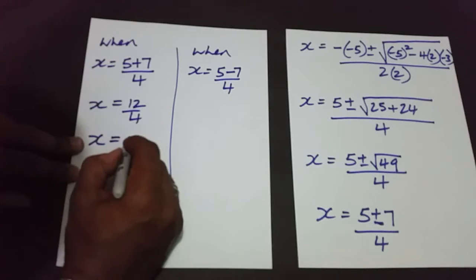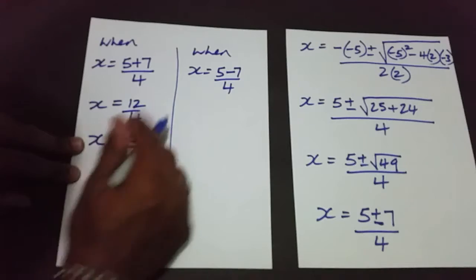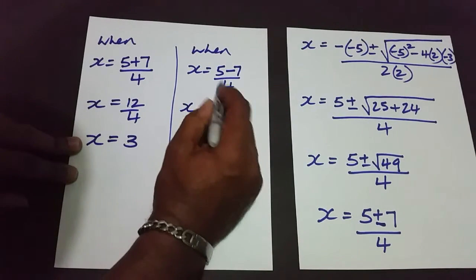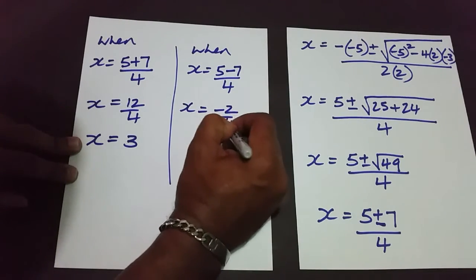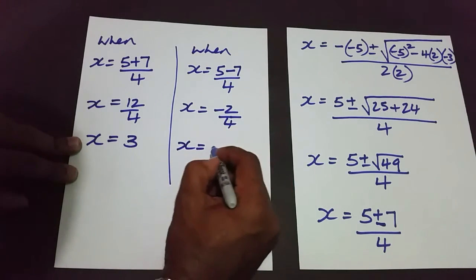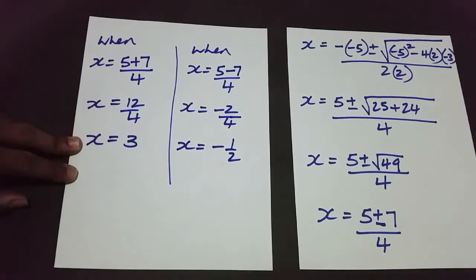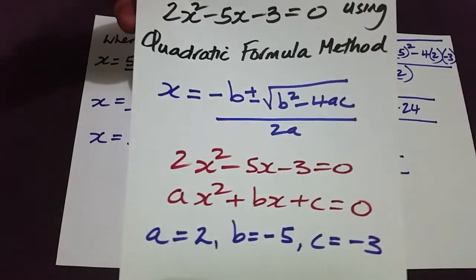In the first case, 5 plus 7 is 12, and 12 divided by 4 is positive 3 — which is what we got when we solved using the factorization method. In the second case, 5 minus 7 is negative 2, and negative 2 over 4 gives us negative one-half — which is also what we got with the factorization method.